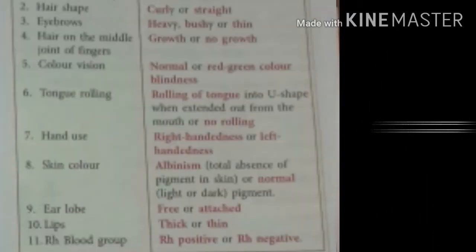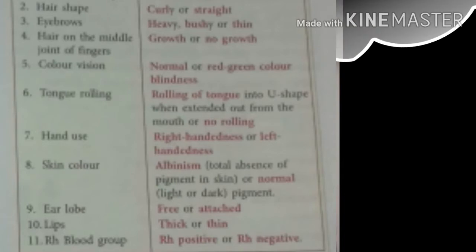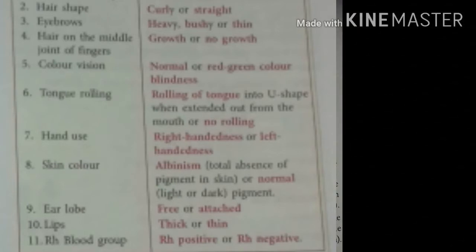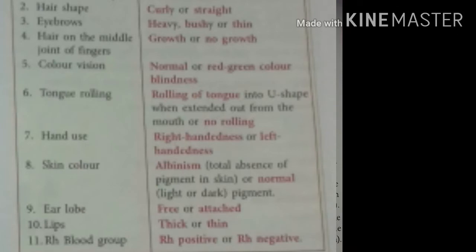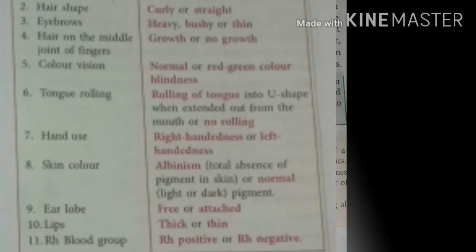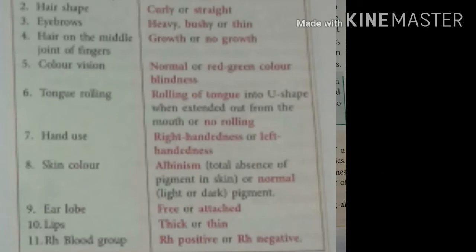For example, color of eyes has two traits: brown and blue. Hair shape: curly or straight. Eyebrows: heavy or thin. Hair on the middle joint of fingers: growth or no growth. Color vision: normal or red-green color blindness. Tongue rolling: rolling of the tongue in a U-shape when extended out of the mouth, or no rolling. Hand use: right-handedness and left-handedness — some people write with the right hand and some with the left hand.